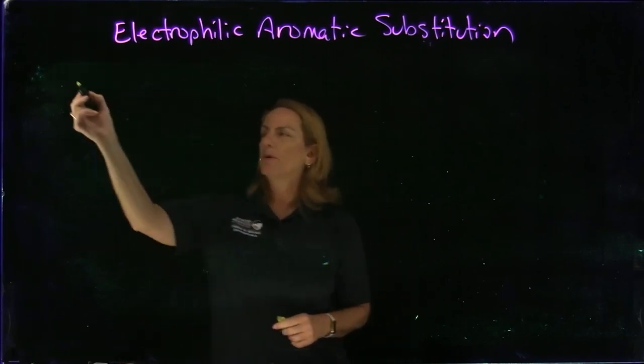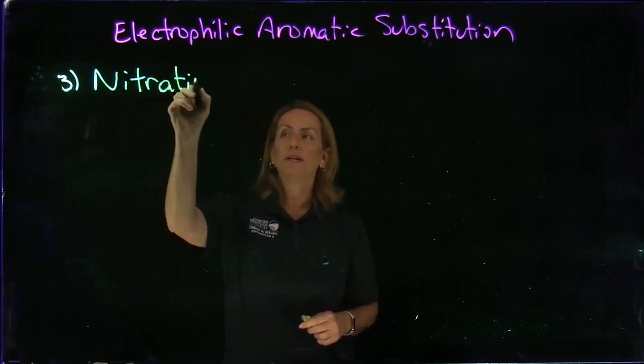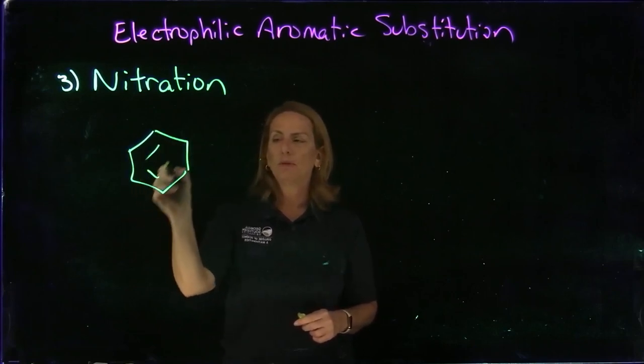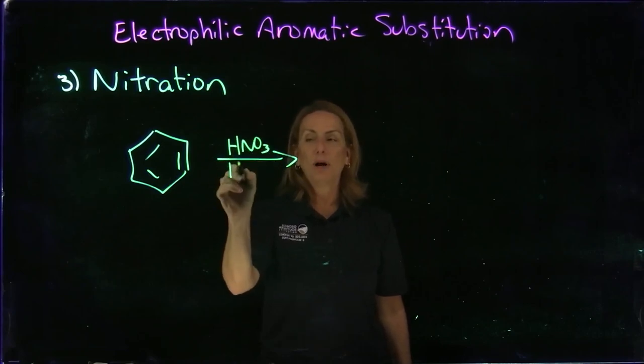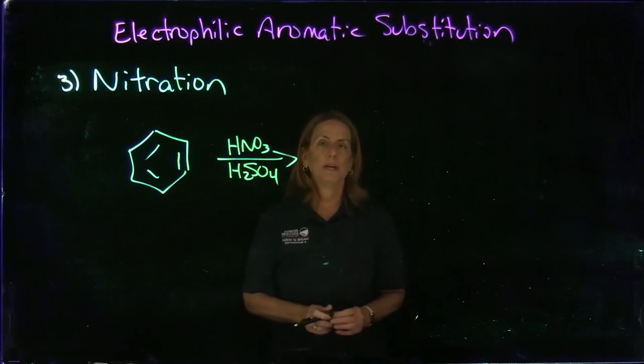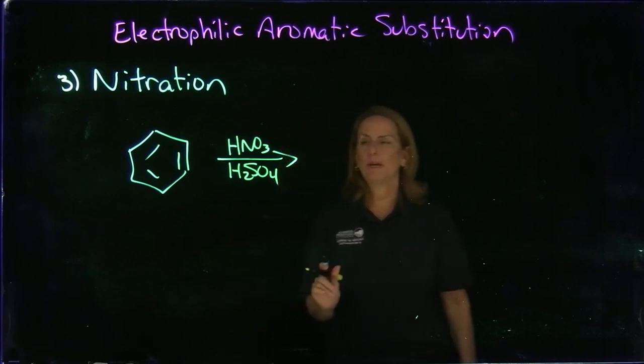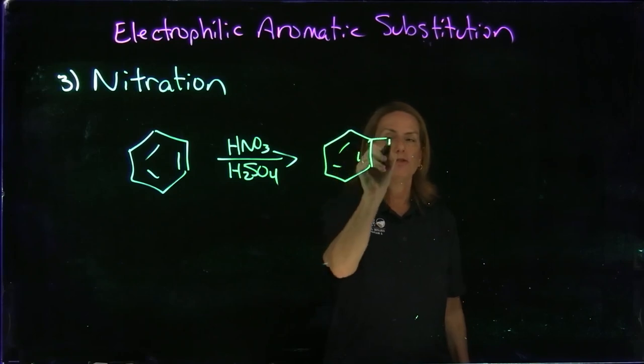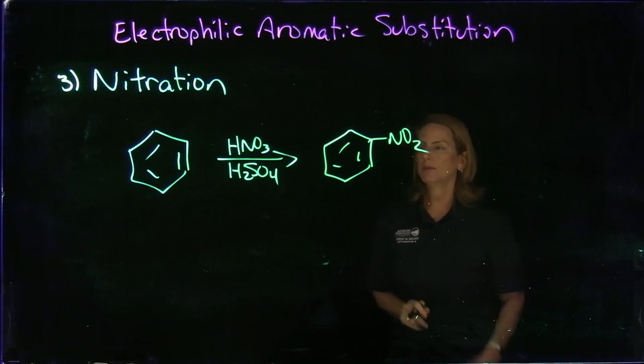Reaction number three is nitration. We start with benzene and add nitric acid plus sulfuric acid. If you look at the mechanism, it's sort of interesting—why do we need two acids? One actually behaves as a base. You'll end up adding the nitro group, and if you remember from the previous chapter, we know how to reduce that nitro group into an amino group. Now we've got some steps in a synthesis that we can use to our benefit.